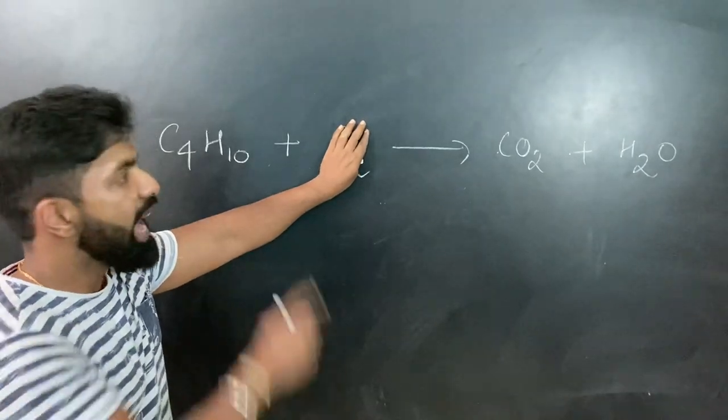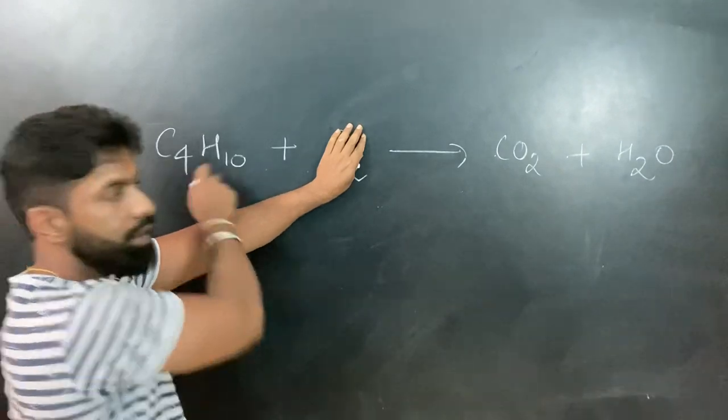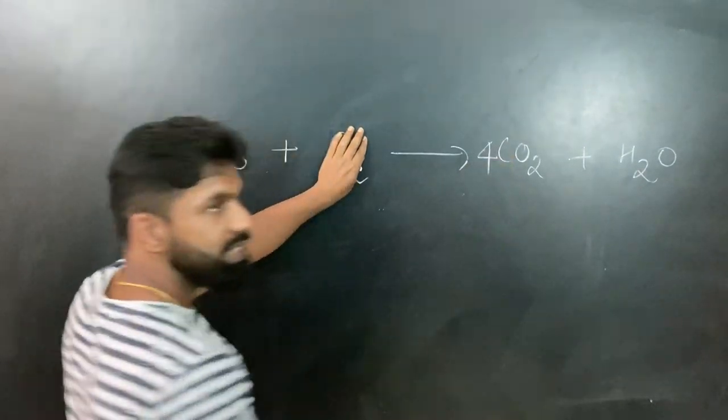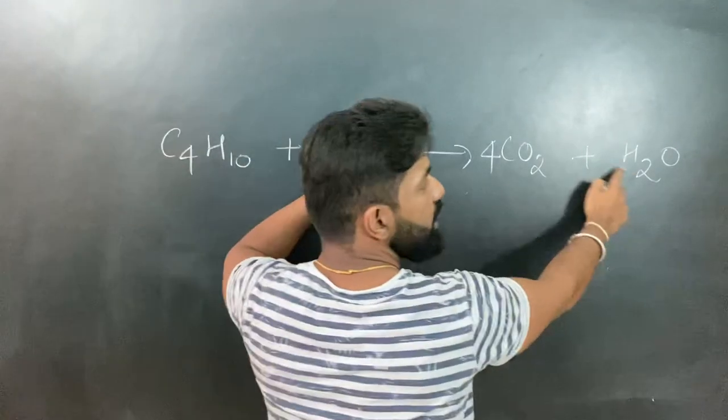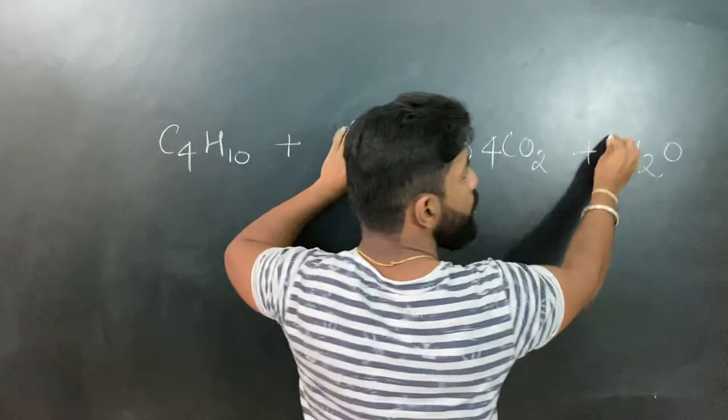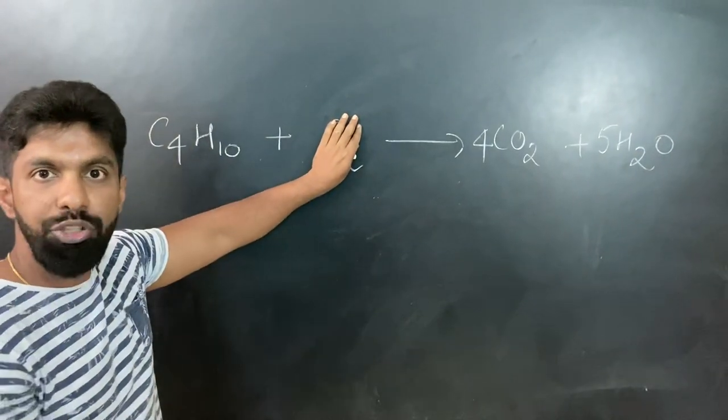Now cover that element and balance everything else. Carbon - I can see a 4 here so I blindly write a 4 here, that's what you would have seen me doing before also. Now hydrogen is 10, so what into 2 is 10? We all know 5 into 2 is 10. So now carbon and hydrogen have got balanced.